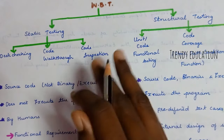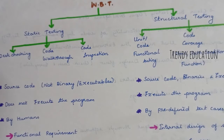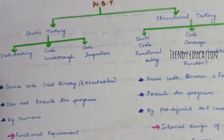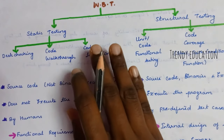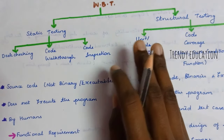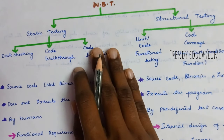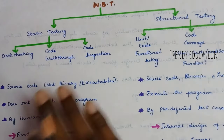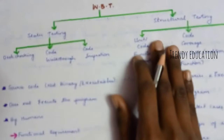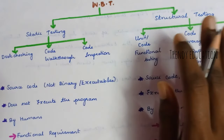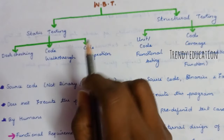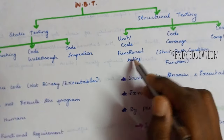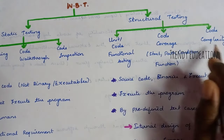We are releasing part 2 to cover this in detail. In static testing, you check the code without running the program — you just check the code without executing it. In structural testing, you run and execute the test. Under structural testing, we have: unit code, code coverage, and code complexity.